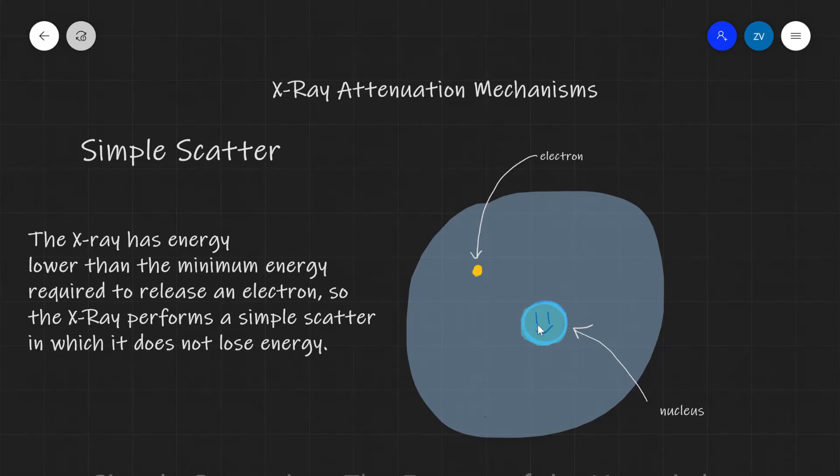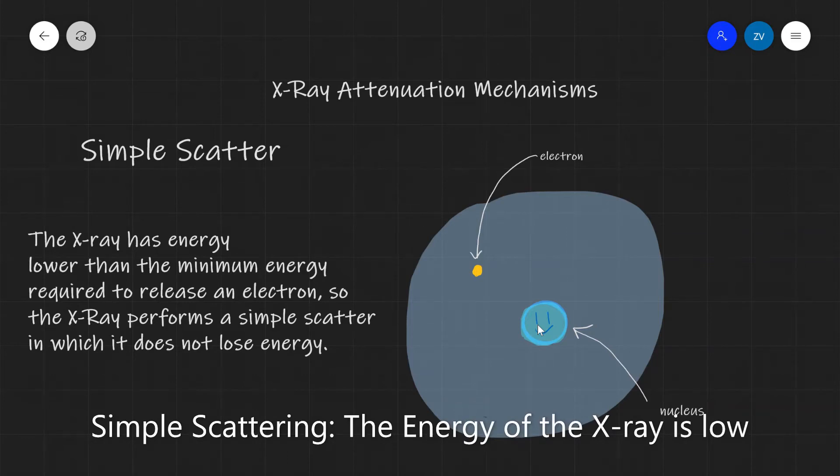Anyways, back to simple scattering. Now this occurs when we have an incoming X-ray. So imagine this over here is our X-ray. If our X-ray doesn't have enough energy to ionize this atom, it does not have enough energy to remove this electron, what simply happens is that the X-ray is actually scattered. So this means that the X-ray is going to change in the direction, it's going to just scatter off this electron.